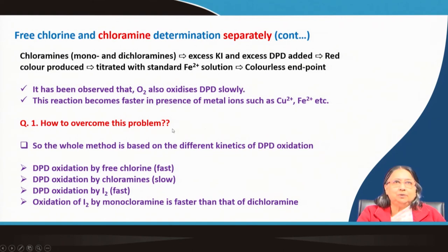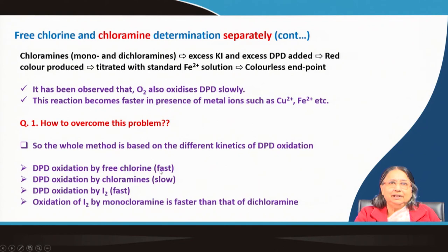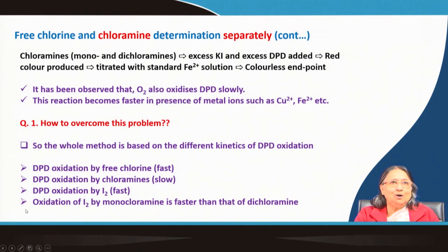The whole DPD method is based on the different kinetics of DPD oxidation: DPD oxidation by free chlorine is fast; by chloramine is slow; by iodine is fast; and oxidation of iodine by monochloramine is faster than that by dichloramine. All these differences are exploited in the measurement.